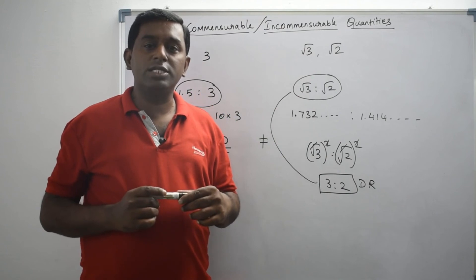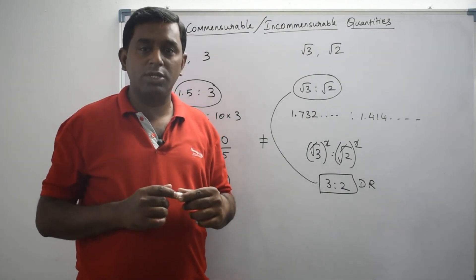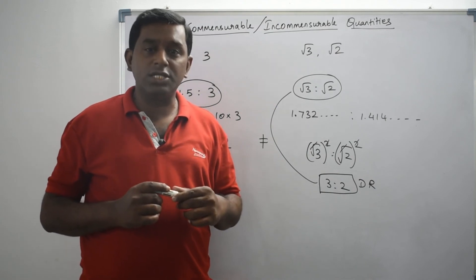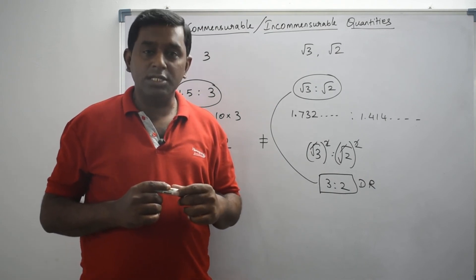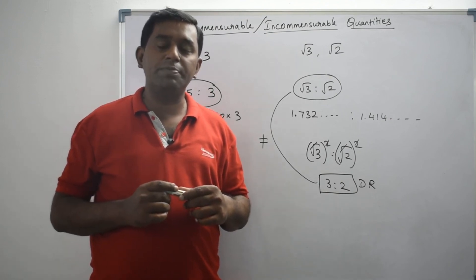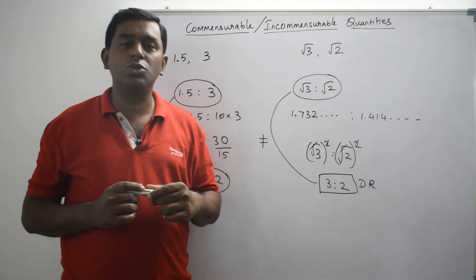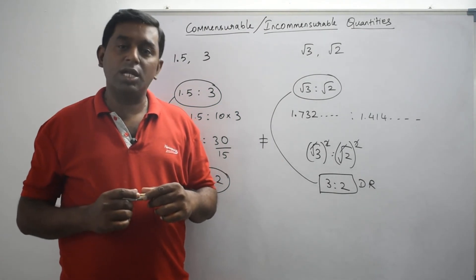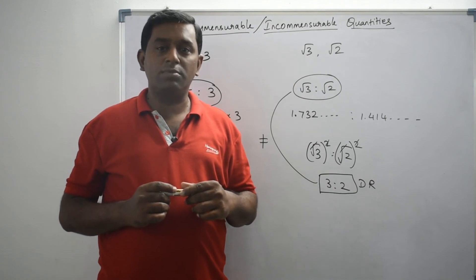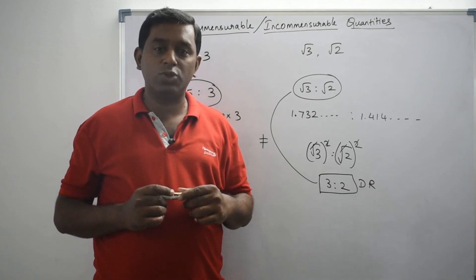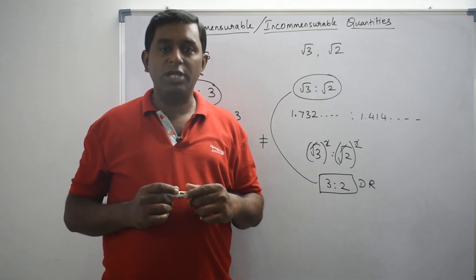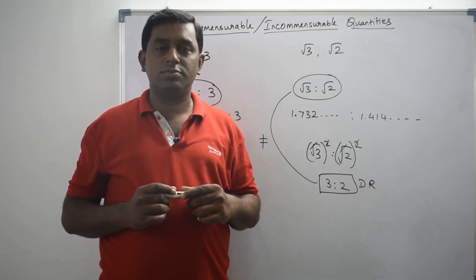To check whether given quantities are commensurable or incommensurable, we should try to express them as a ratio of integers using only multiplication or division. We can multiply both terms of the ratio by the same non-zero number, or divide both terms by the same non-zero number. We are not supposed to use any other operation, such as squaring both terms or raising both terms to any other power.